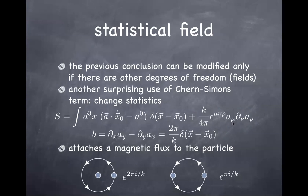Student: Is there a more concrete interpretation of what these additional degrees of freedom are, other than this field that controls exchange statistics? Well, this is the only one I know in 2+1 dimensions, but I don't have a proof. Student: But in materials that host a fractional quantum Hall phase, what actually are the constituents of the fractionalized degrees of freedom? I'll answer part of that once I get to the discussion on the quantum Hall system itself.